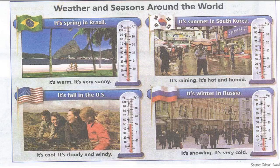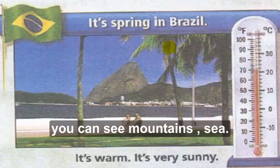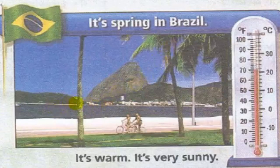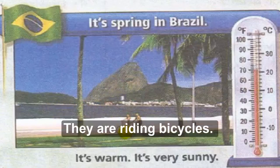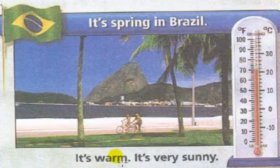Exercise 7: Weather and seasons around the world. Picture number 1 — look at the picture, what do you see? It's sunny. It's warm — not hot, not cold. You can see mountains and sea. They're riding bicycles. The temperature is 23 degrees, so it's warm and very sunny. It's spring in Brazil — it's warm and very sunny.